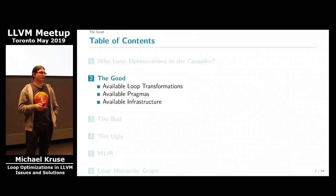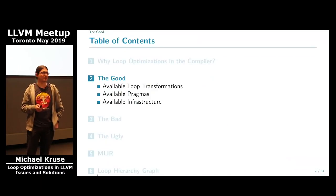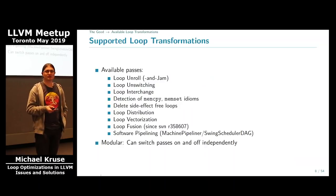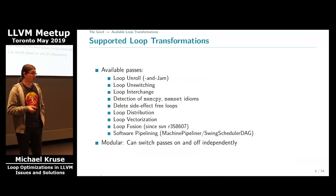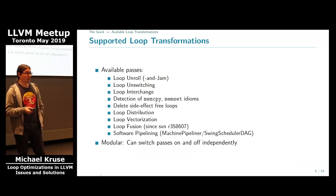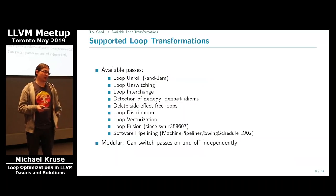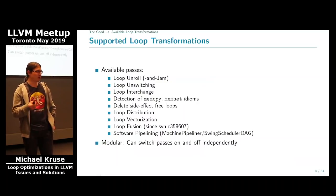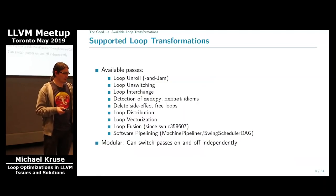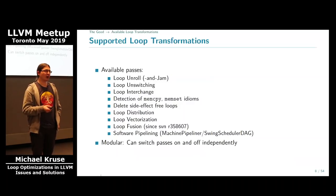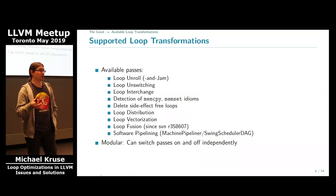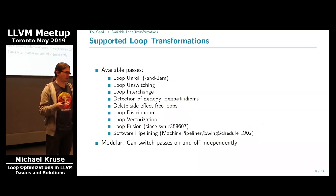Let's go to LLVM. First, what I think is good in LLVM. We have quite a large collection of passes in LLVM that do loop transformation: loop unroll, loop unswitching, loop interchange, loop idiom recognition, loop deletion, loop distribution, loop vectorization, loop fusion — just recently added — software pipelining. All of these are quite modular, independent of each other. You can apply one transformation independently or switch them on and off as you like.